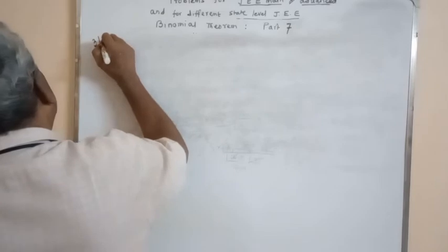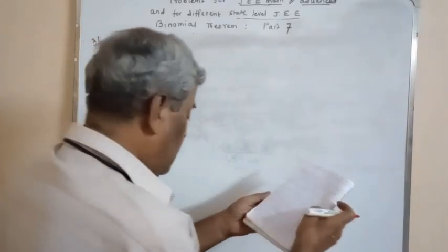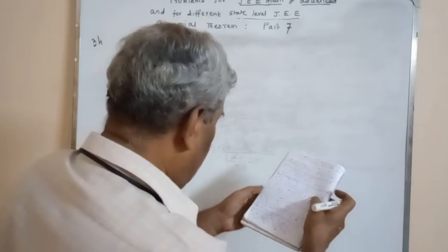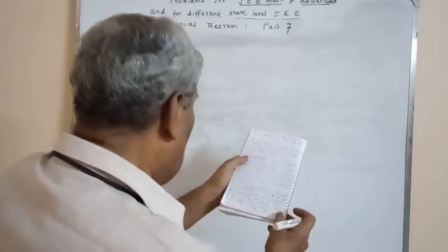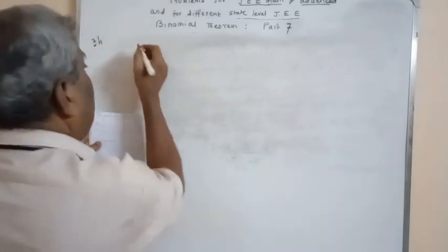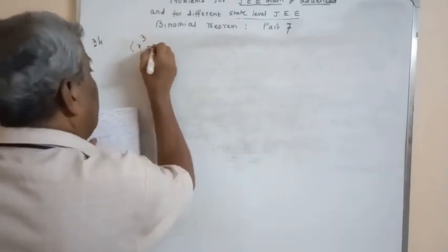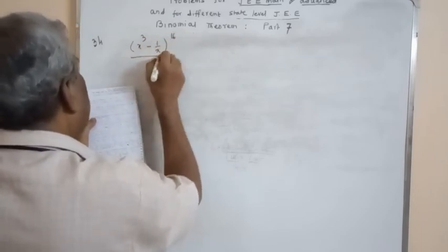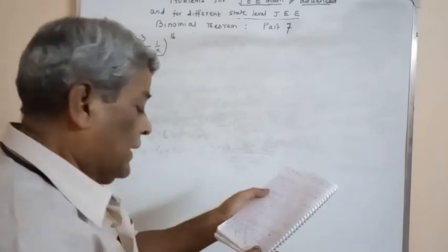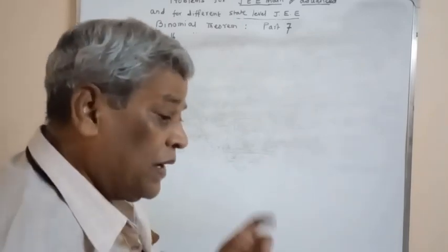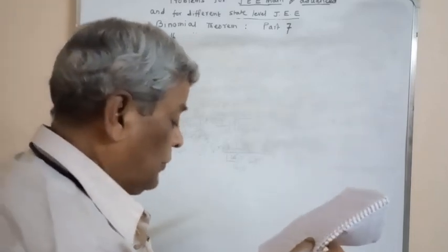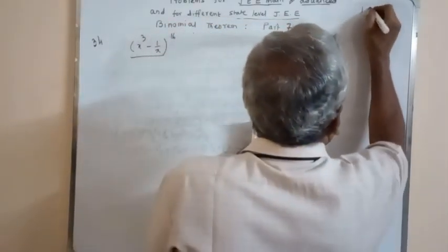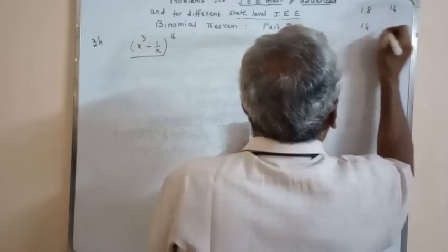Problem number 34. The number of terms containing positive powers of x in (x³ - 1/x)^16. Options: 18, 16, 14, and 12.